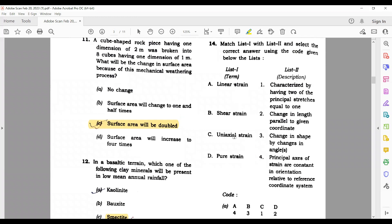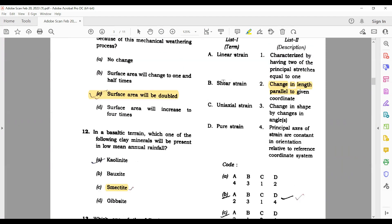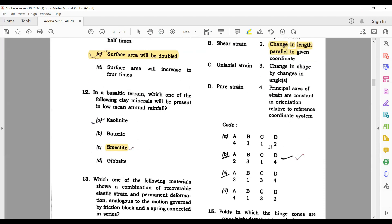Match the following here - linear strain, shear strain, uniaxial strain and pure strain. So here if we see linear strain, it matches with the change in length parallel to the given coordinate. So A is with two. Options in A2, B and C, you have to solve one more. B shear strain goes with the change in shape by changes in angle. So B is with three. So this is your correct answer.